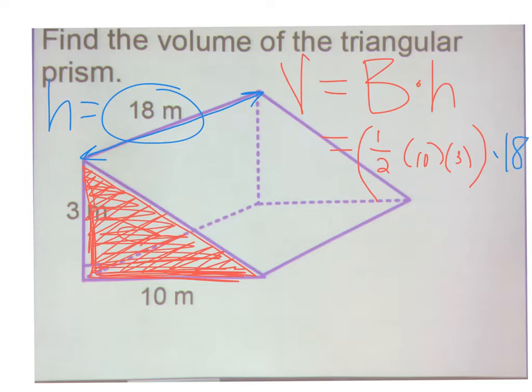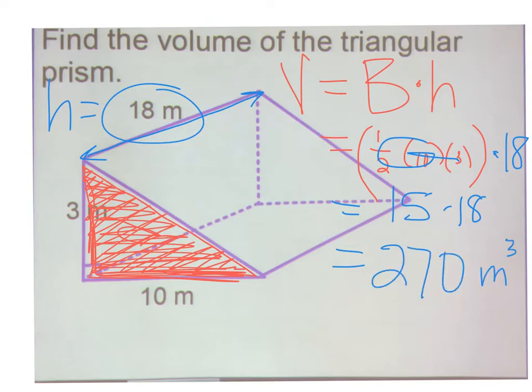If we put this all together: one-half of 10 is 5, 5 times 3 is 15, 15 times 18 is 270 cubic meters for the volume of this triangular prism.